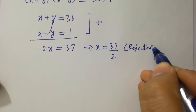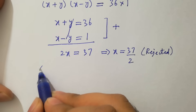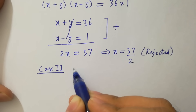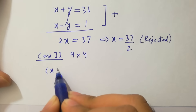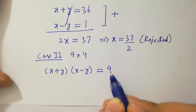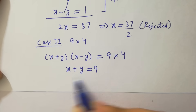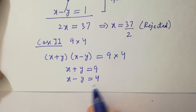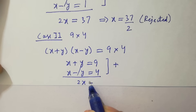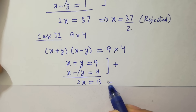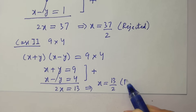Case 2: (x+y)(x-y) = 9×4. By comparison, x+y = 9 and x-y = 4. Adding them: 2x = 9+4 = 13, so x = 13/2, which is a fraction and not a natural number. This case is rejected.